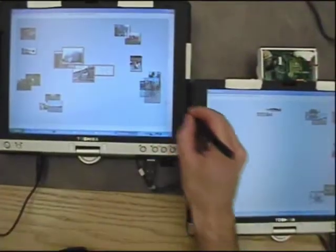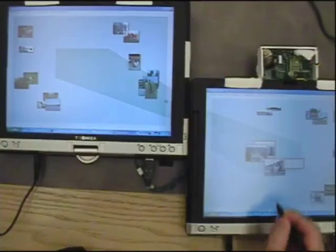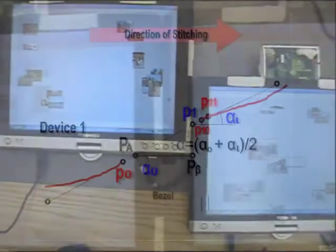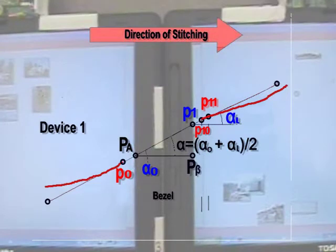Note that the graphical feedback appears to span the bezel between the displays, even if we arrange the tablets differently. We can do this because our software fits a line equation to the pen coordinates provided by the stitching gesture itself.